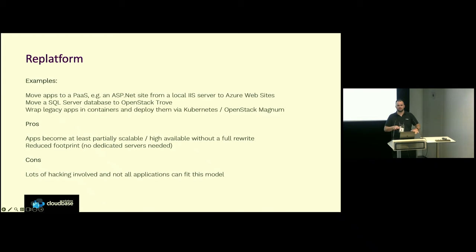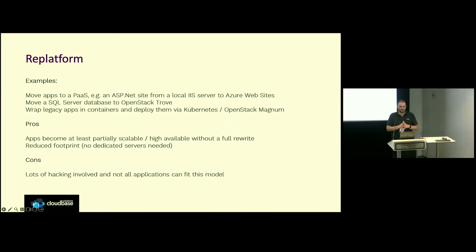Another one, which is basically a middle ground between re-architecting and the re-hosting strategy we'll be focusing on, is re-platforming. It means you're trying to move some of your in-house legacy application into a different context. For example, you have an application that previously ran on bare metal nodes, but you manage to write a Dockerfile compatible with the application, deploy it, stick it in Kubernetes, and it works out of the box. The thing is that with legacy code, this sometimes requires some hacking and compromises, and not every application fits the model.